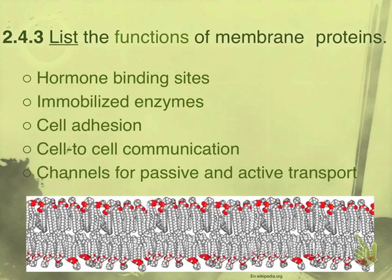A function of an inside peripheral protein would be to act as an immobilized enzyme. A lot of these proteins are enzymes, but when they are loosely attached to the cell membrane, they're immobilized — they're not being used at that time. They are stored on the membrane and available for reactions when needed. An enzyme is basically a biological catalyst, something that speeds up a reaction without requiring a higher temperature.